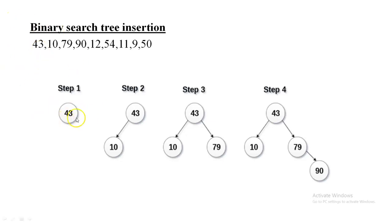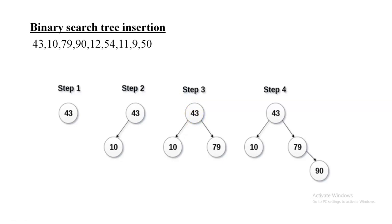The next node to insert is 10. We compare it with the root node 43. Since 10 is less than 43, it is inserted on the left side of the root. Next, we insert 79. Comparing 79 with the root 43, since 79 is greater than 43, it is inserted as the right child of 43.